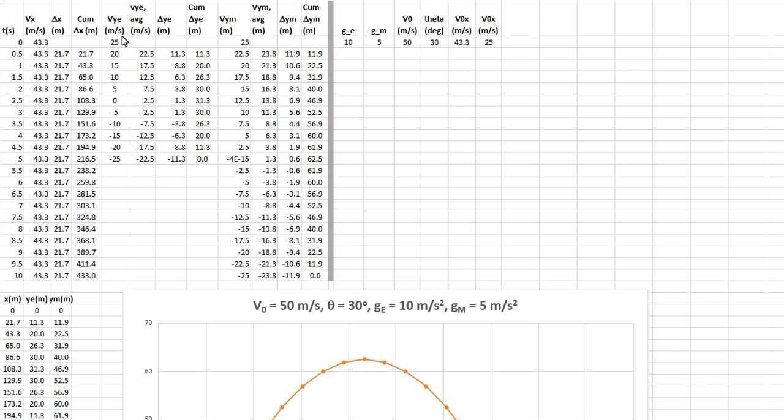The instantaneous y velocity for the Earth starts at 25. And then since you have a 10 meter per second per second acceleration, every second it decreases by 10. You can see from 25 to 1 second, it decreases by 10, goes from 25 to 15. But in half a second it would do half of that. So since I'm doing half a second time deltas, these decrease by 5.